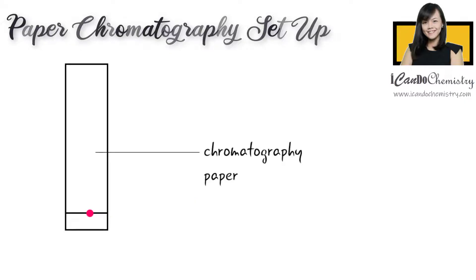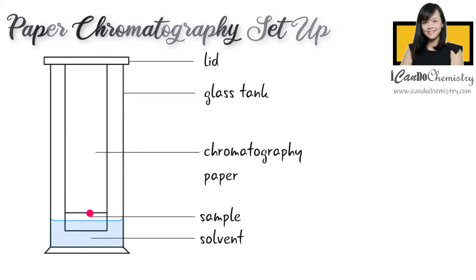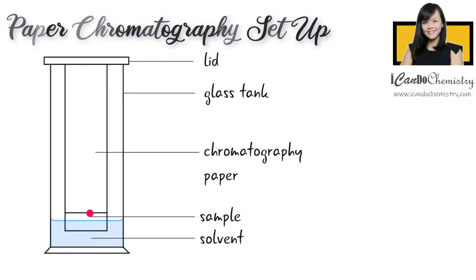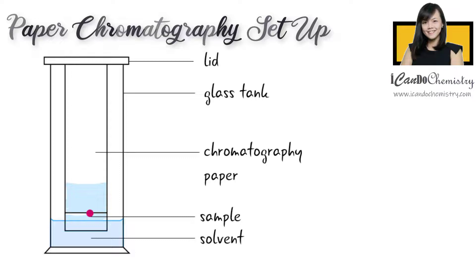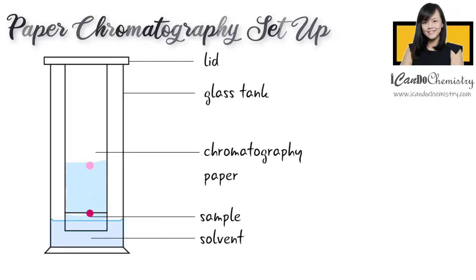Then we put a drop of the sample on the pencil line. Once the sample has dried, we dip the chromatography paper into a suitable solvent — there are different solvents available, such as ethanol. The solvent will then get soaked up by the paper, travel up the paper, and dissolve the sample. The sample will travel up the chromatography paper together with the solvent. Different components in the sample will move at different speeds and so become separated.